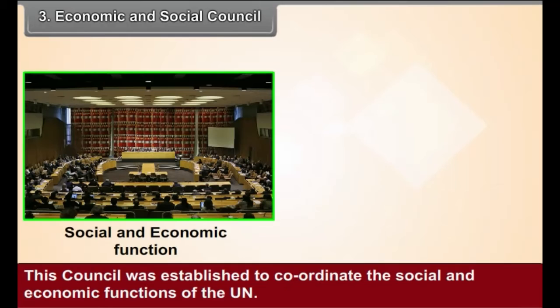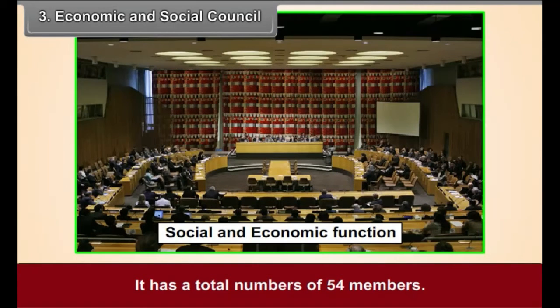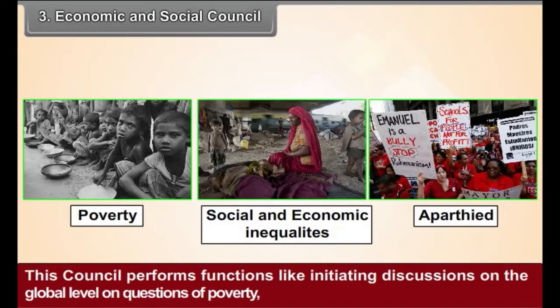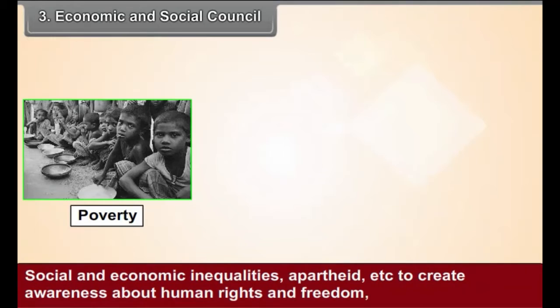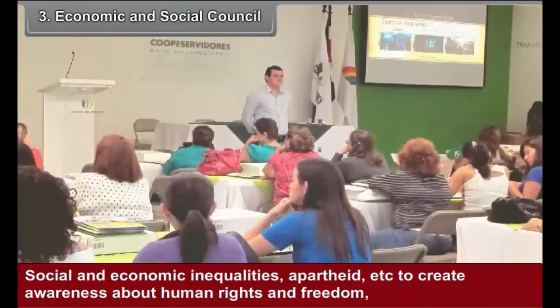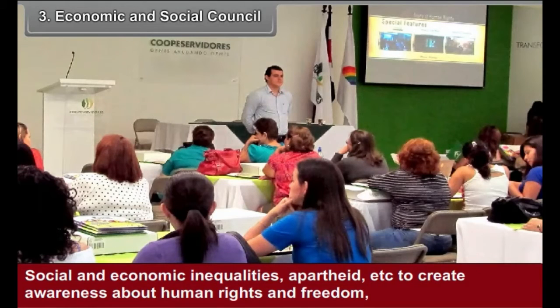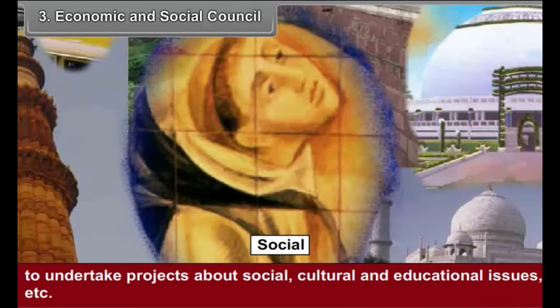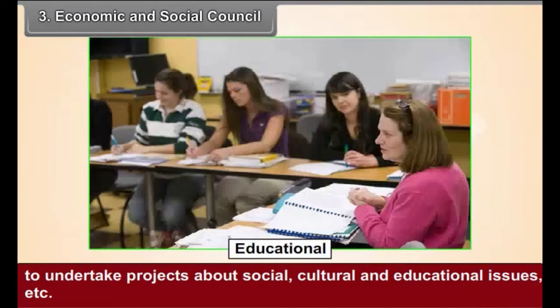Economic and Social Council - Structure: This Council was established to coordinate the social and economic functions of the UN. It has a total number of 54 members. Functions: This Council initiates discussions at the global level on questions of poverty, social and economic inequalities, and apartheid. It creates awareness about human rights and freedom, and undertakes projects on social, cultural, and educational issues.